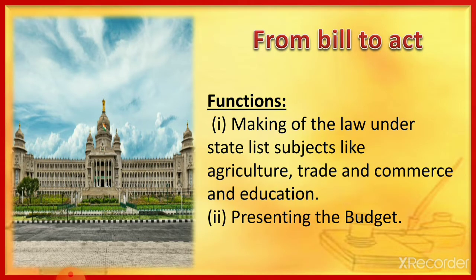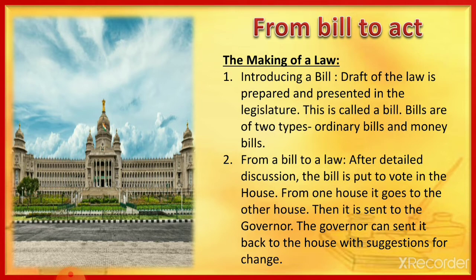The process of making and passing law takes place in the Legislature. The function of the Legislative Assembly includes making laws under the state list subjects like agriculture, trade and commerce, and education, as well as presenting budgets. Laws for the whole nation are enacted in Parliament; similarly, laws applicable only in a particular state are enacted in the legislature of that state. The draft of a law is prepared and presented in the Legislature — this is called a Bill. Bills are of two types: Ordinary Bills and Money Bills.